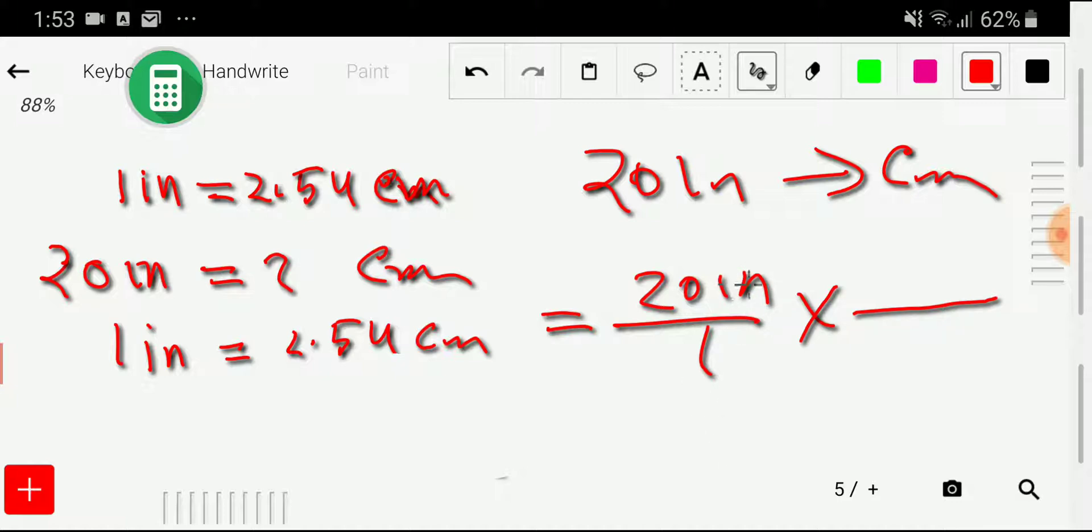I would like to cancel this inch, so I have to take inch here. With inch we have the relationship of centimeter, so we write centimeter here. From the equivalence, we see that 2.54 is associated with centimeter and one with inch. So this inch will cancel out, and we are getting 20 times 2.54 centimeters.